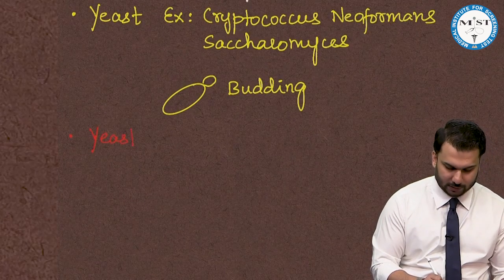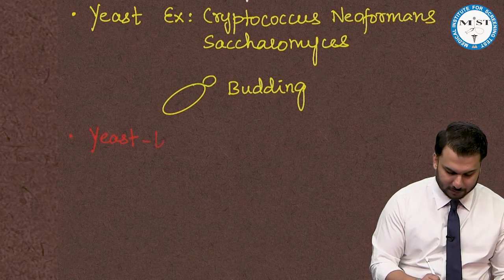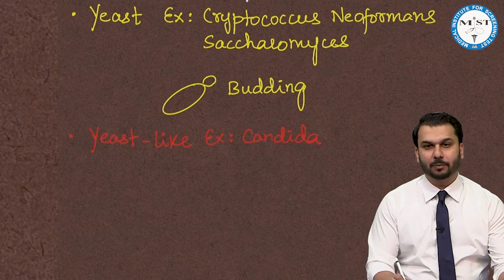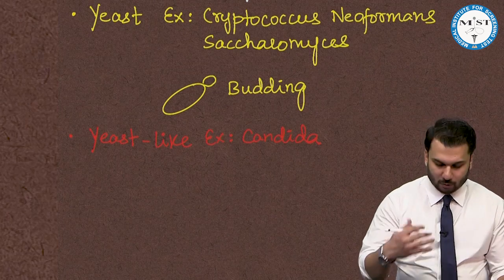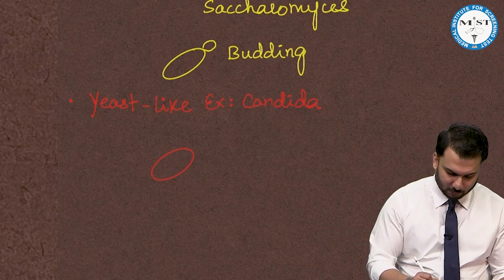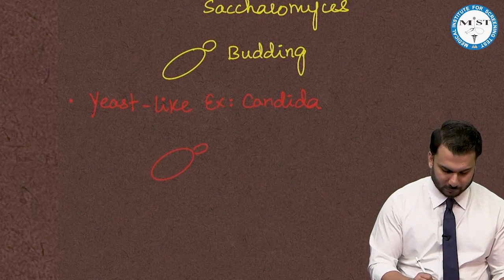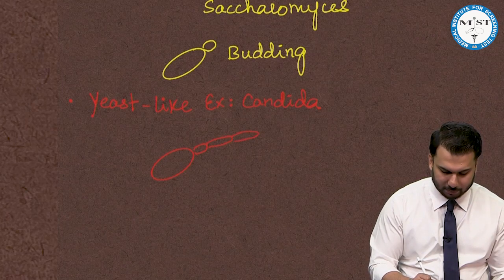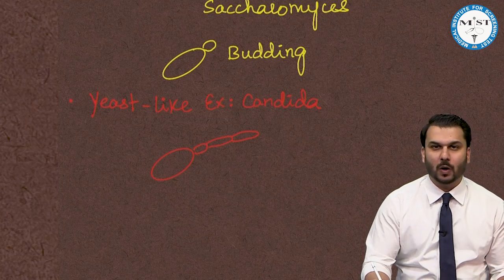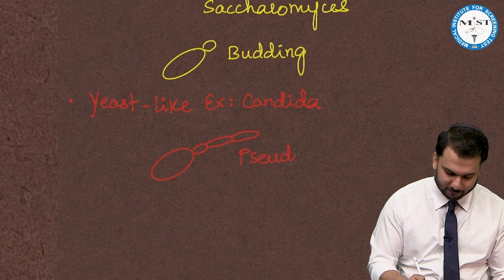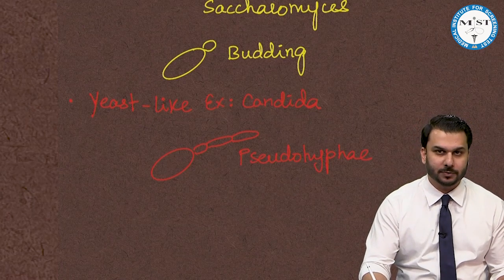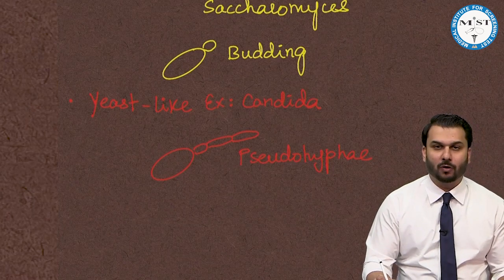The second category is called yeast-like organisms. They are not true yeasts but copy them. Candida is an example. It also forms buds, but the buds do not separate out — they keep elongating, forming what is called pseudo-hyphae. This formation of pseudo-hyphae is a classical feature of Candida.